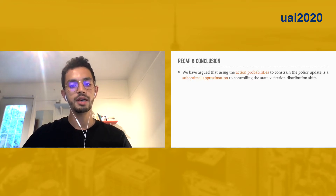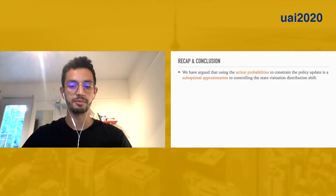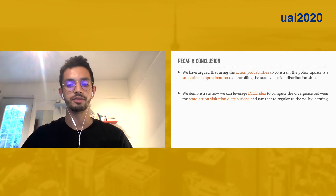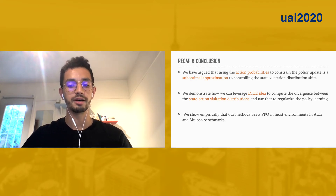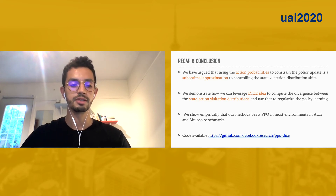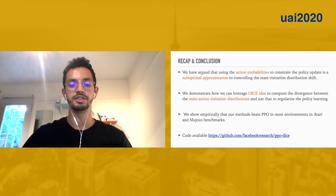In conclusion, we have argued that using action probabilities to constrain policy updates is a suboptimal approximation to control state visitation shift. We demonstrate how we can leverage the DICE idea to compute the divergence between state-action visitation distributions and use that to regularize policy learning. Empirically, our method beats PPO and TRPO in most environments in the Atari and MuJoCo benchmarks. We also provide an open-source implementation of our method. Thank you for listening, and please check the paper for more details.